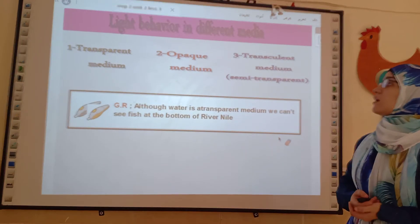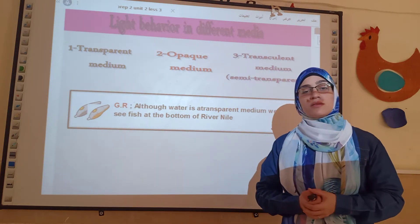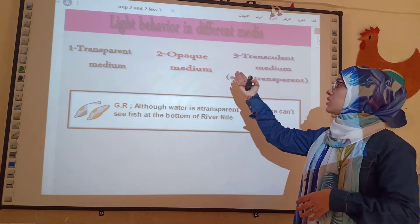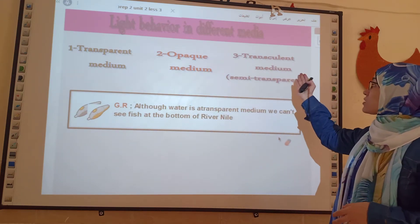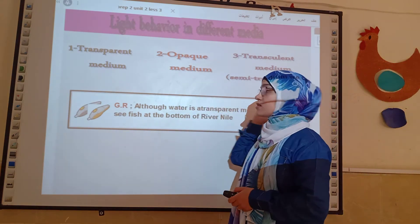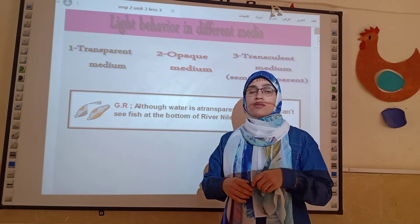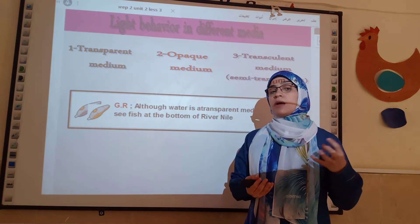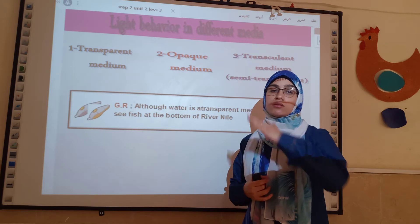Light behavior in different media. We have three different media through which light can travel: transparent media, opaque media, and semi-transparent or translucent media. Transparent media, like air and water, is the medium which allows most of the light to pass through.